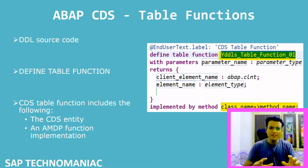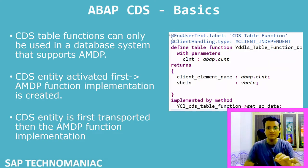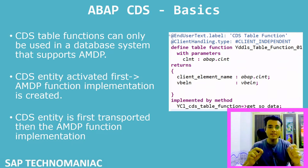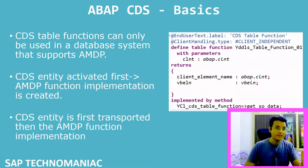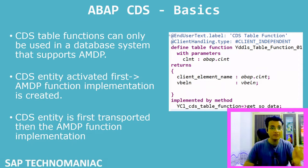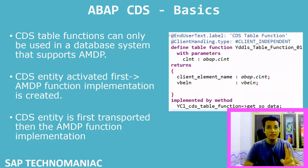Before going further, here are the basic things about CDS table functions. First important point: you can create a CDS table function only for databases that support AMDP. Currently, only SAP HANA supports AMDP — ABAP Managed Database Processors. No other database supports it currently, though in future if another database supports AMDP, we can create CDS table functions there as well.